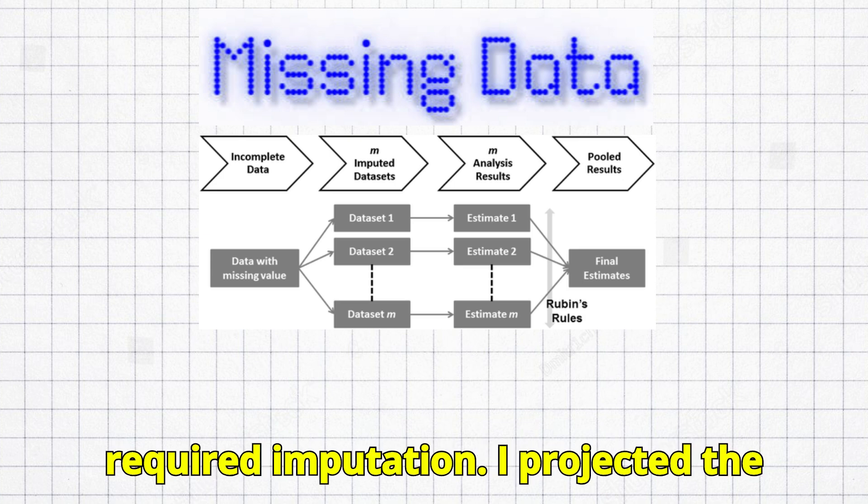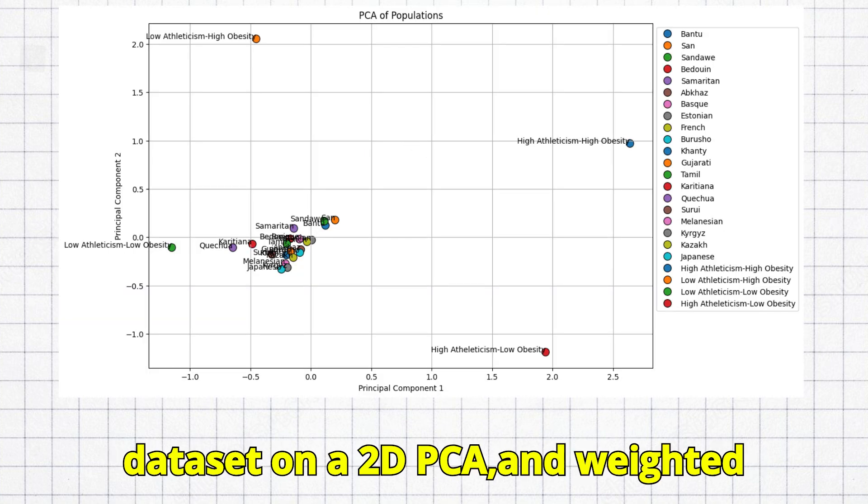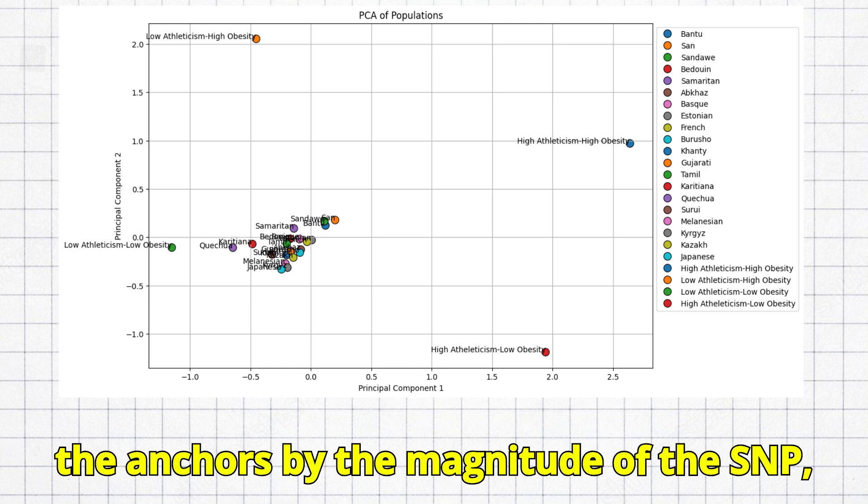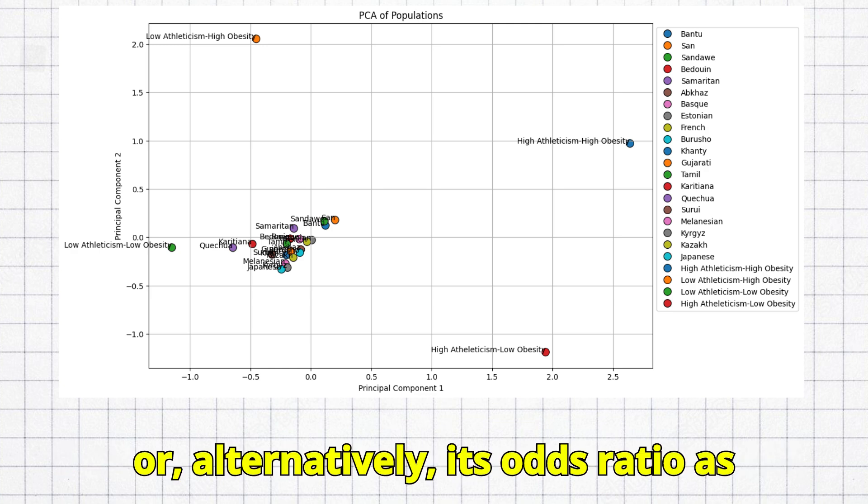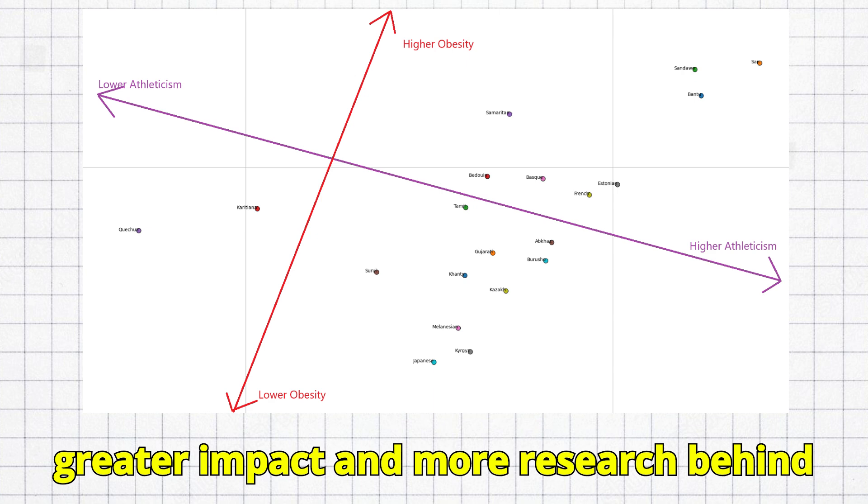Most of the SNPs required imputation. I projected the dataset on a 2D PCA and weighted the anchors by the magnitude of the SNP, or alternatively its odds ratio as mentioned on SNPedia. I did this to put more emphasis on SNPs which have a greater impact and more research behind them.